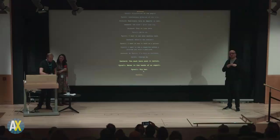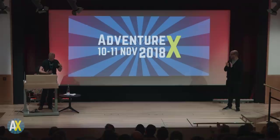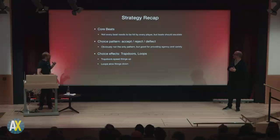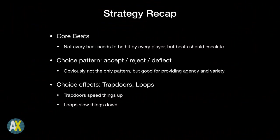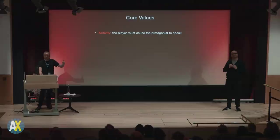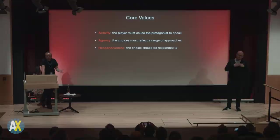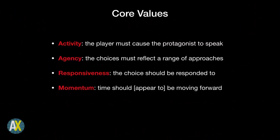So there we go. That's done. We got through it. Quick recap — you saw everything we did. Feeding in choices, using limits, using loops. Some core values: the player is what's causing the protagonist to speak. Agency: we reflect a range of approaches, but it's the range we give the player, not the range the player wants — they don't know the story, we do. Choices should be responsive because that's why people paid to play your game. And momentum: time is vital, it must always be moving forward or at least be seen to be moving forward. Loops are not an acceptable substitute for timing. Thank you very much.